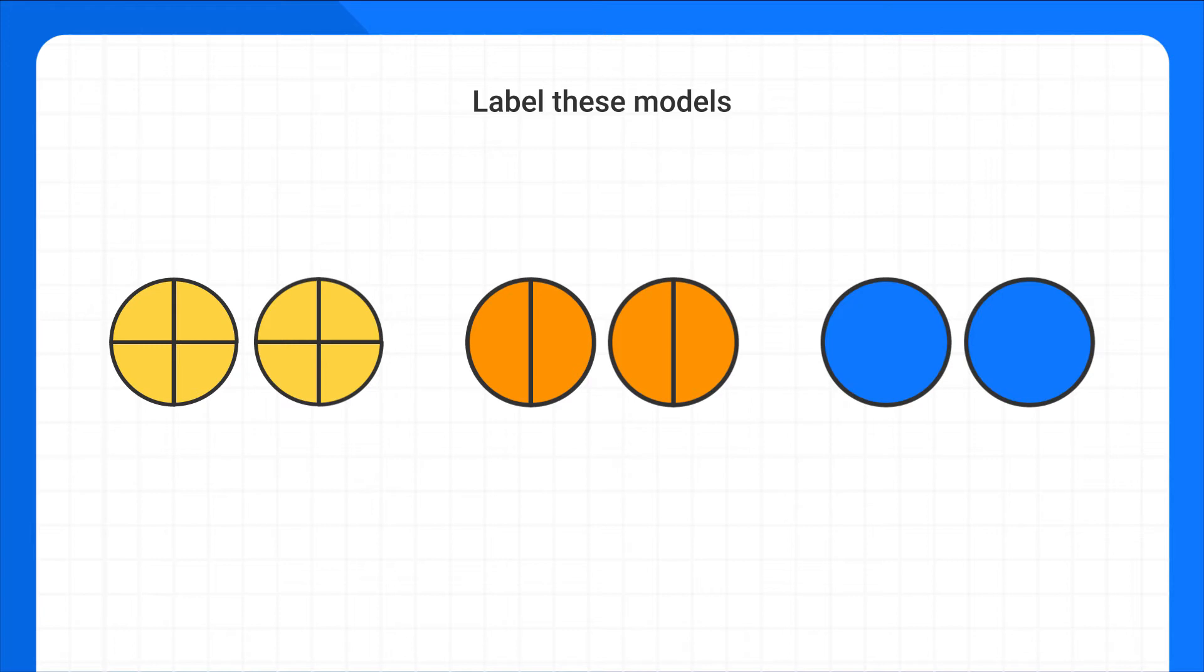Now I first notice that each of these models is showing two whole circles, but the circles in each group are split up in different ways.